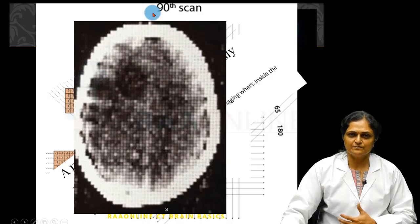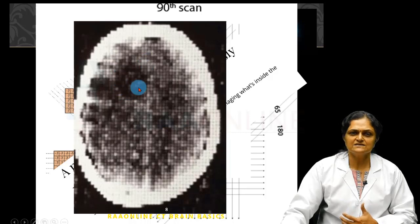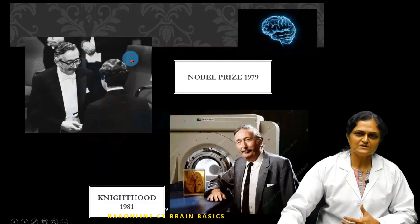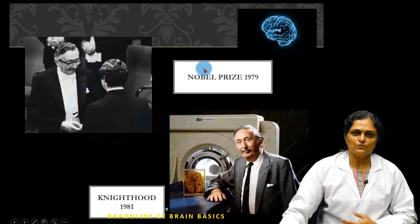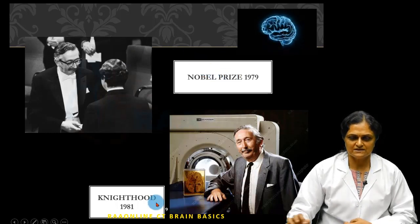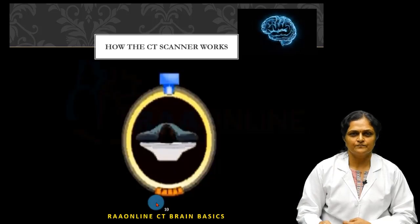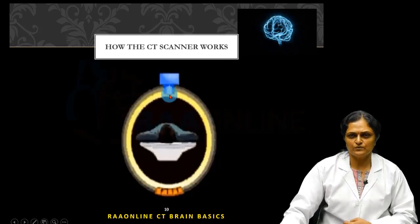This new approach revealed the previously unseen in a beautiful way. This was the first CT scan of the brain ever taken, and it took almost 15 minutes to get a single slice. You can see the tumor in the frontal lobe. For this wonderful work, Hounsfield was awarded the Nobel Prize in 1979 and was knighted in 1981.